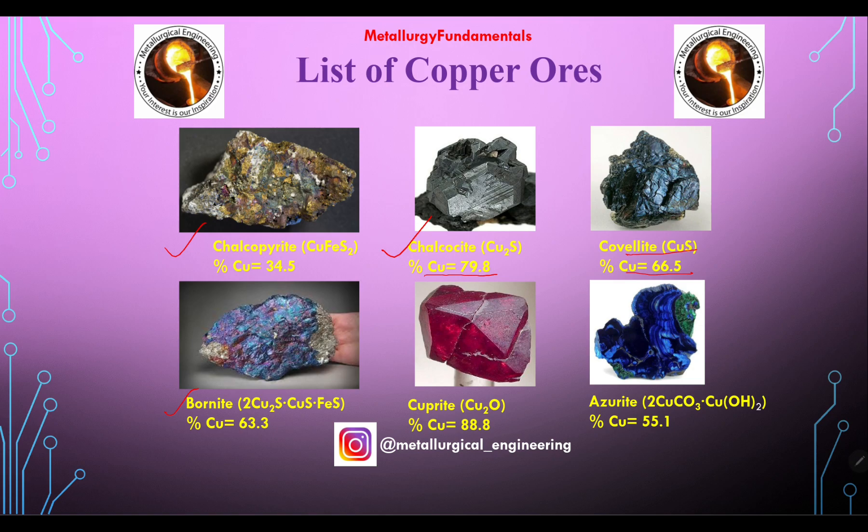Bornite is 2Cu₂S·CuS·FeS with copper percentage 63.3%. Cuprite is Cu₂O with copper percentage 88.8%. Azurite has a copper percentage of 55.1%.